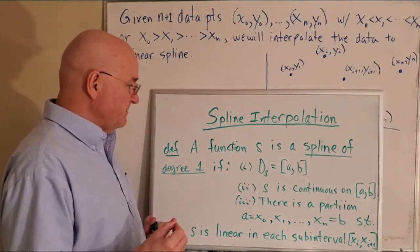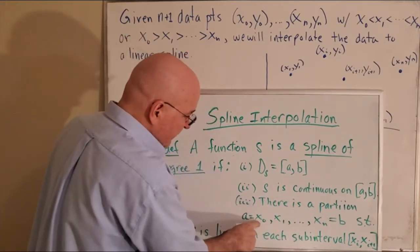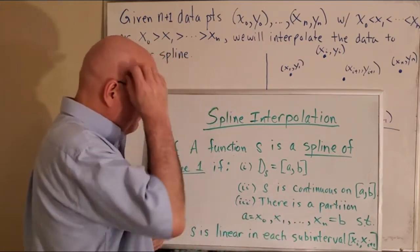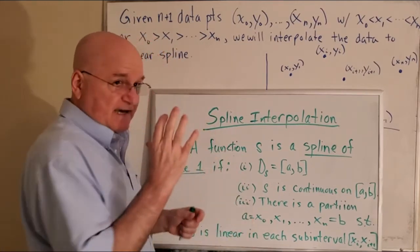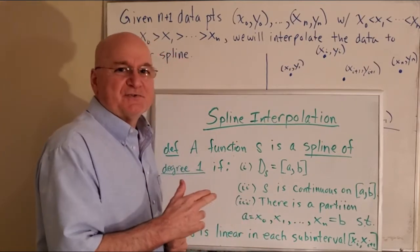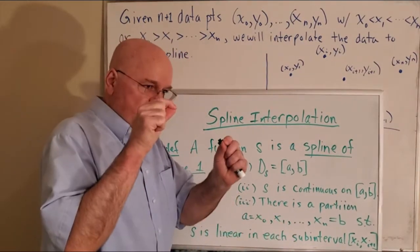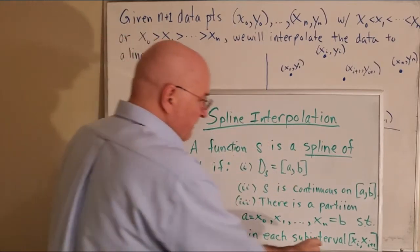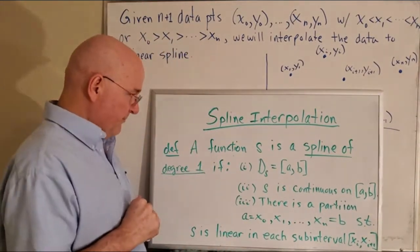And number three, there is a partition, which we've seen this many times before, going from a to b, we'll call a x0, we'll call b xn, and you've got a series of x points in between them, such that in between x0 and x1, they're connected by a straight line, the xy pairs are. And between x1 and x2, another straight line, and then another straight line, all the way. So between every subinterval from xi to xi plus 1, it's just a straight line connecting the two data points.